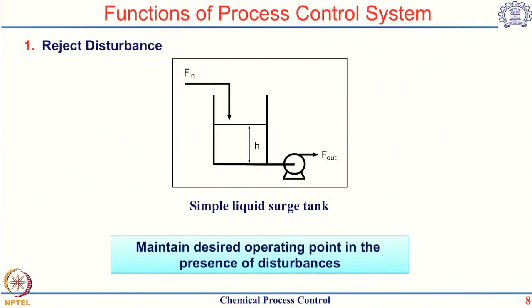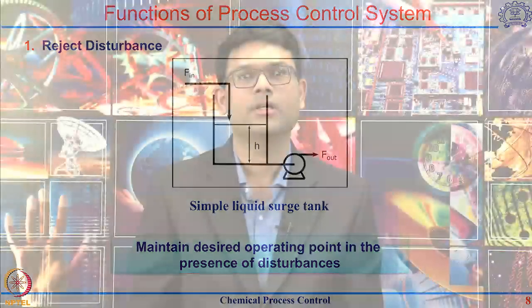Most of the control systems which you would see have their primary job as rejecting the effect of a disturbance. Now sometimes the control system is also implemented to stabilize an unstable operating point. Before going forward, let me explain what I mean by stability.